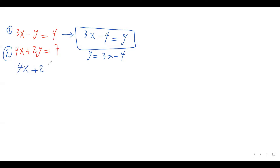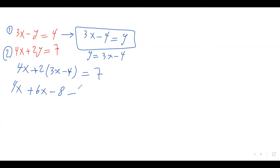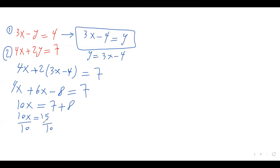Now substitute this expression into the second equation for y. We have 4x plus 2y equals 7, so replace y with (3x minus 4): 4x plus 2 times (3x minus 4) equals 7. Distribute the 2: 2 times 3x is positive 6x, 2 times negative 4 is minus 8. Combine like terms: 4x plus 6x equals 10x, so 10x minus 8 equals 7. Move negative 8 to the right side — it becomes positive 8: 10x equals 15. Divide both sides by 10, so x equals 3 over 2.